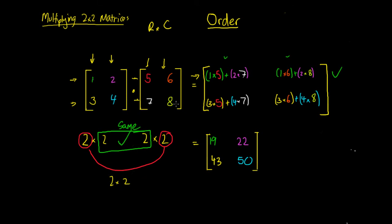So you can see when we're multiplying 2 by 2 matrices, the result is also going to be a 2 by 2 matrix — you've just got to follow this process. It's quite tricky, so just keep doing some practice and hopefully you guys get there. Good luck — I'll put out some examples for you to have a go at on multiplying 2 by 2 matrices. Thanks.